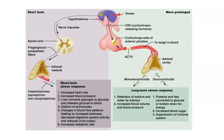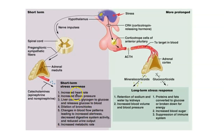For short-term stress response: the hypothalamus sends a signal to the autonomic nervous system, and the impulse travels from the lateral horn of the spinal cord straight to the adrenal medulla, releasing epinephrine and norepinephrine into the blood. This triggers everything you'd expect from the sympathetic nervous system — increased heart rate, increased blood pressure, liver converting glycogen to glucose for energy, dilation of bronchioles, and increased metabolic rate. But this is all short-term.